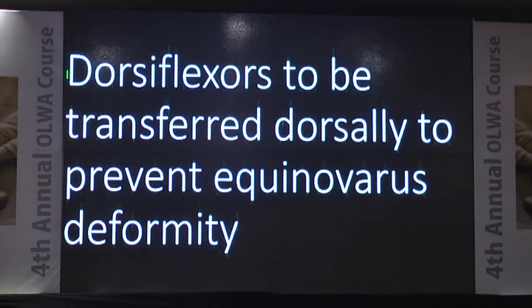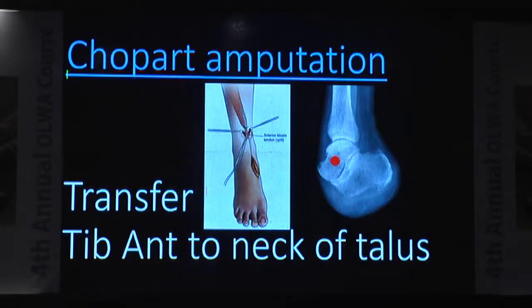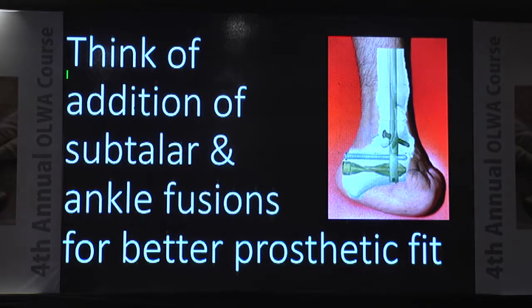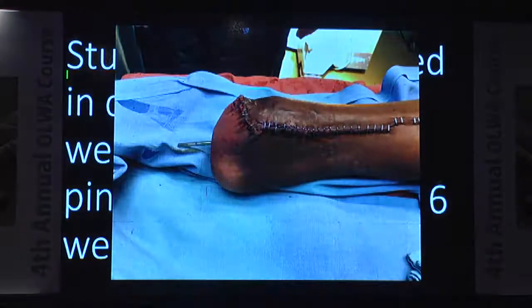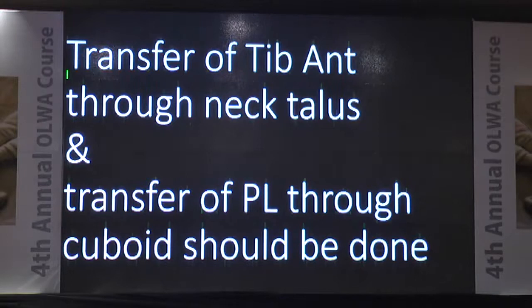Dorsiflexors are to be transferred dorsally to prevent equinovarus deformity. For Lisfranc amputation, transfer tibialis anterior to the cuneiform if available. For Chopart amputation, transfer tibialis anterior to the neck of the talus to form a sling. Consider adding subtalar and ankle fusion for a better prosthetic fit. A stump should be placed in dorsiflexion for six weeks, or a trans-ankle Steinmann pin should be used for Chopart or Lisfranc amputation. Transfer of tibialis anterior through the neck of the talus and peroneus longus through the cuboid should be done for Chopart amputation.